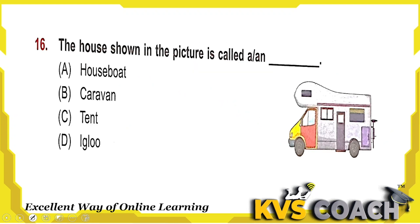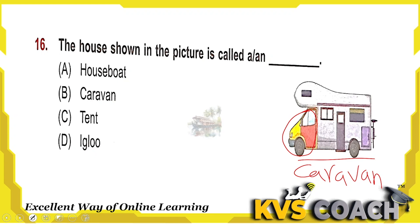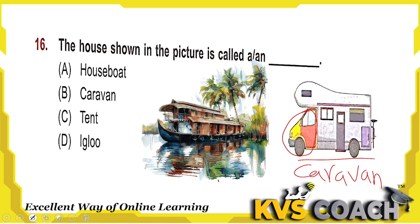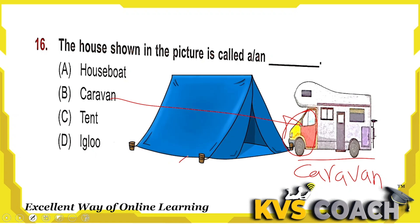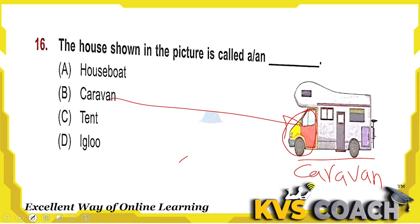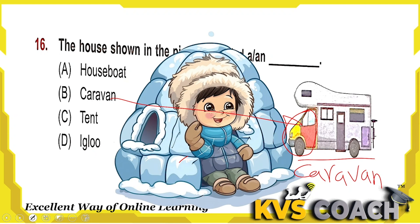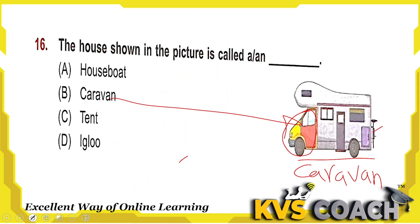Next: the house shown in the picture is called a dash. It is a caravan — a house on a jeep or truck, a mobile house. Looking at the options: a houseboat is found in lakes, a caravan is a mobile house on wheels, a tent is used for camping, and an igloo is a house made of ice. The picture shows a caravan. Option B is the right answer.